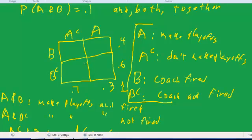And we have one inside number. We have A and B, the probability that they make the playoffs and the coach is fired. I made that up as 0.1. And you'll notice that from that we can get all the other numbers in the box. Down here, the top right plus the bottom right has to add to the number below, the 0.3. So 0.1 plus 0.2 equals 0.3.